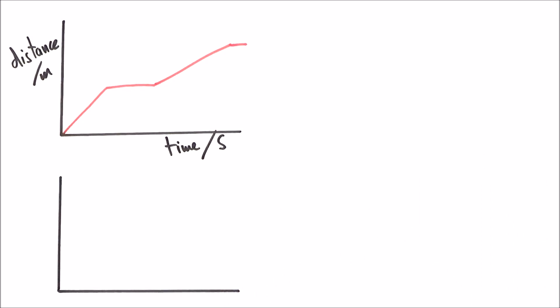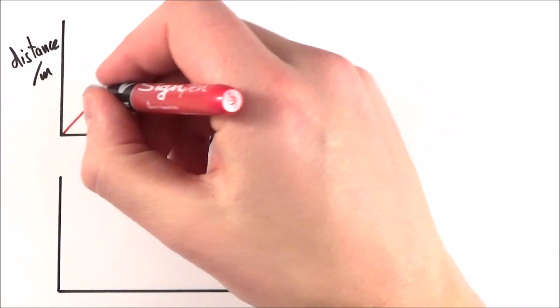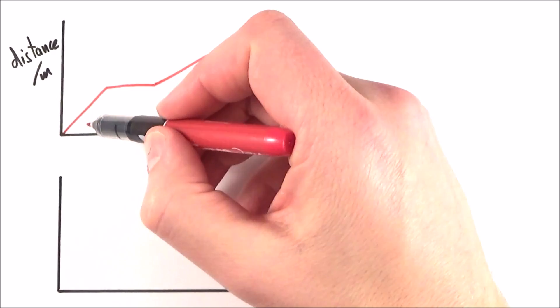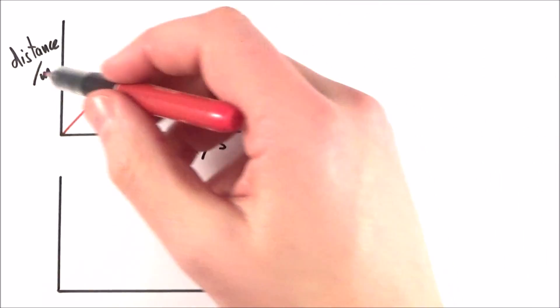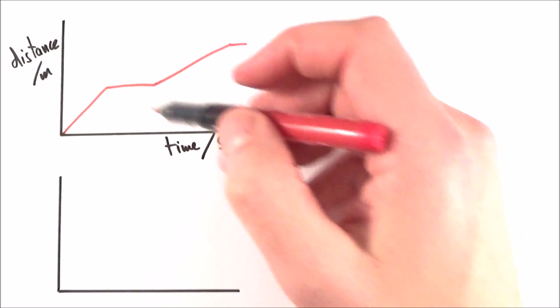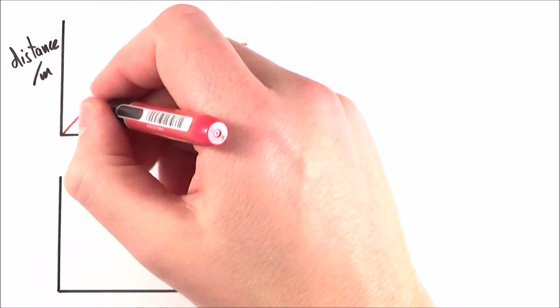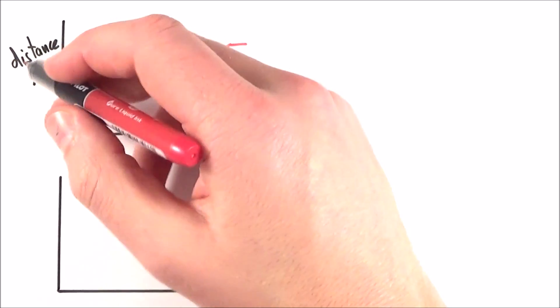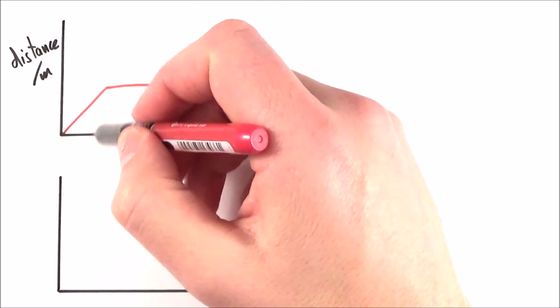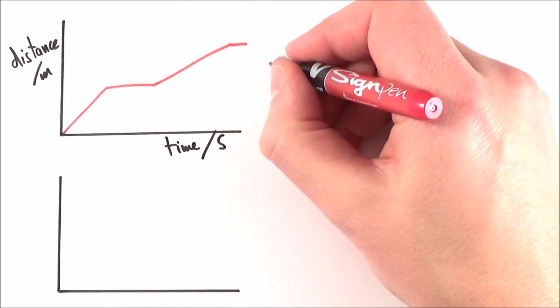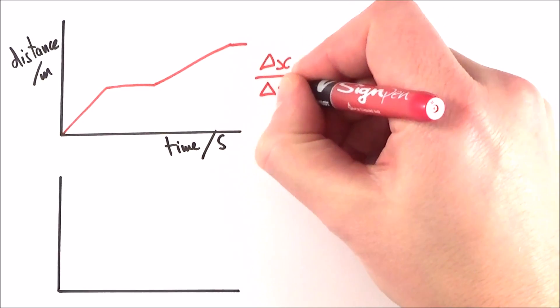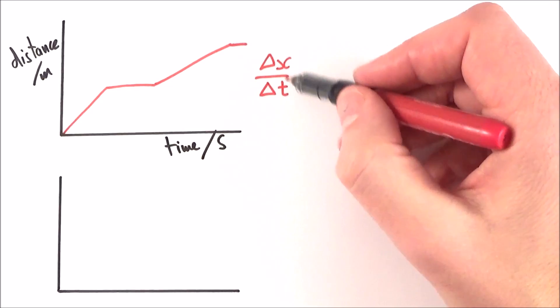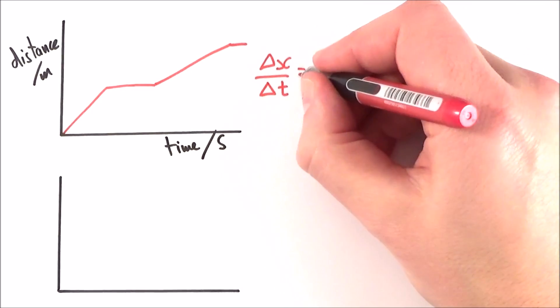So this is a distance-time graph that you should be fairly familiar with. Now the gradient of this graph is going to be equal to the change in y by the change in x. The distance is the value of x representing distance, and we've got t over here, so the gradient is going to be equal to the change in x over the change in time.